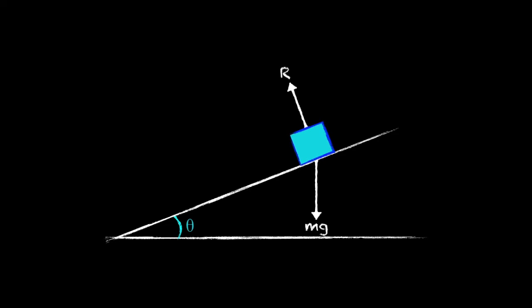If the slope is rough, then we also need to consider friction which acts parallel to the slope and opposite to the direction of motion.